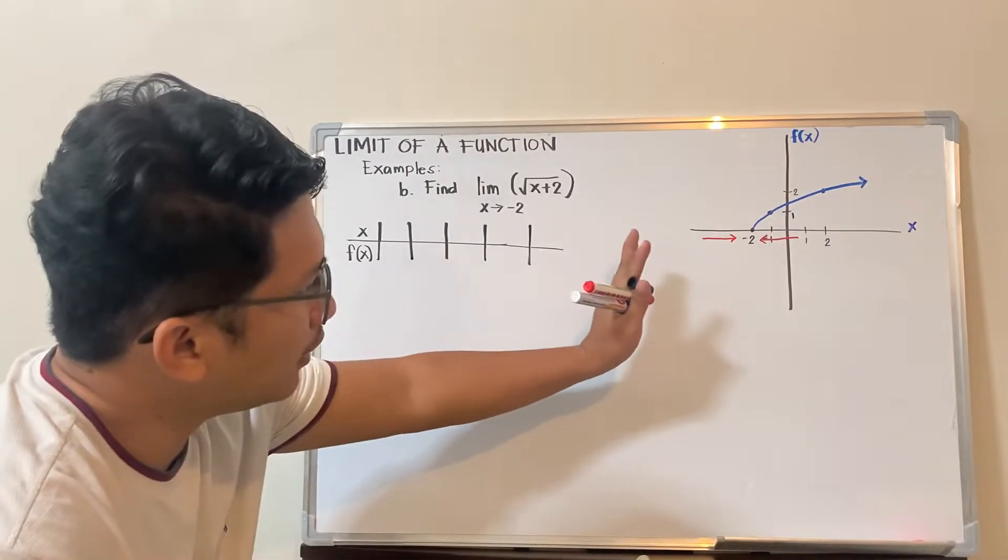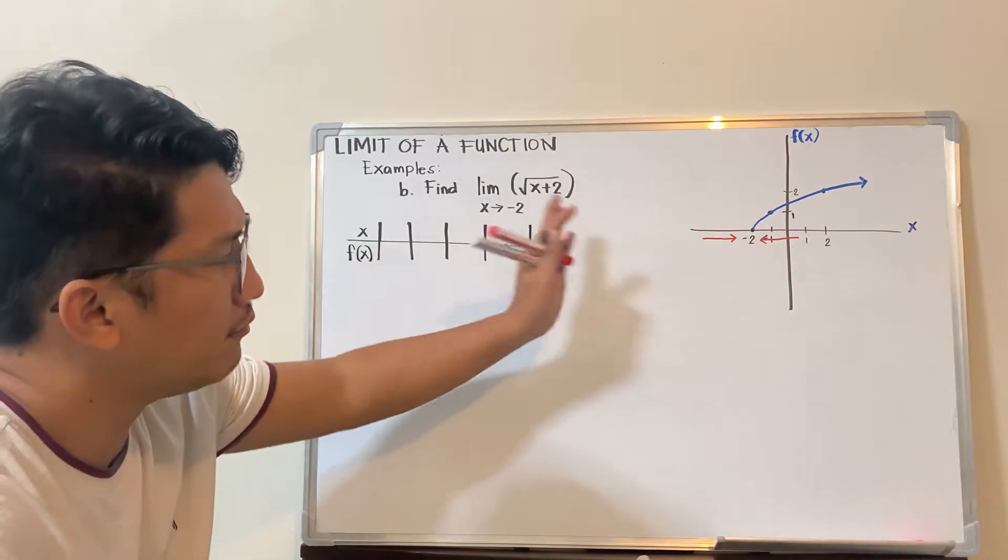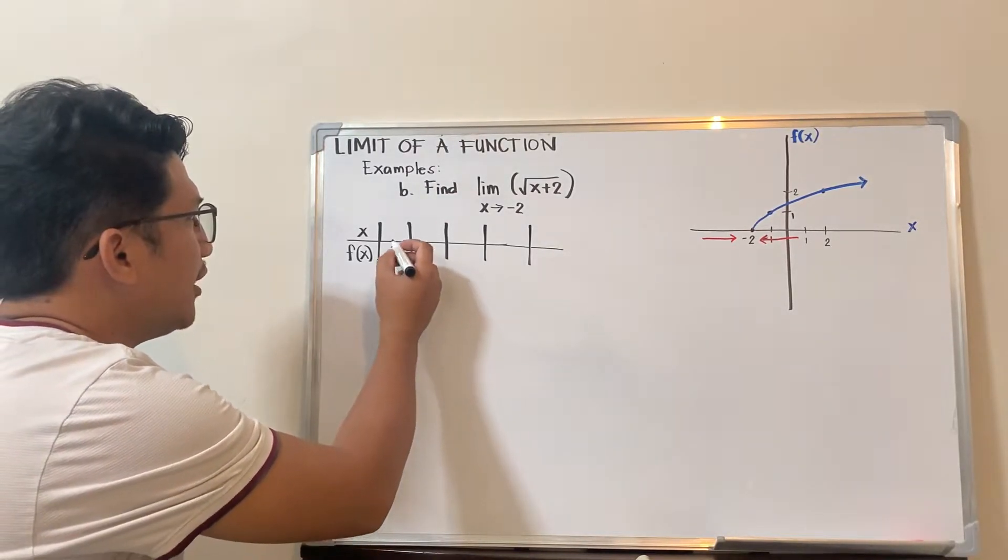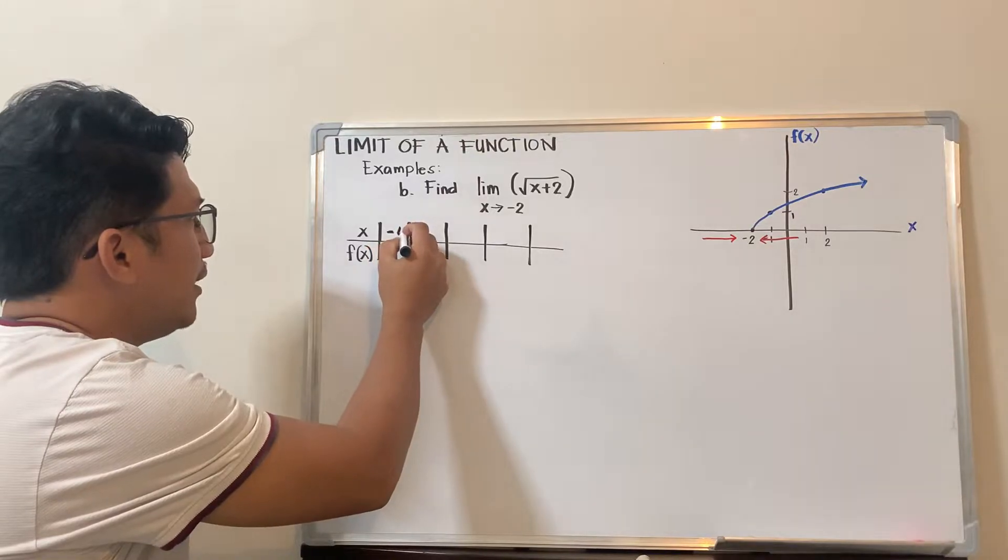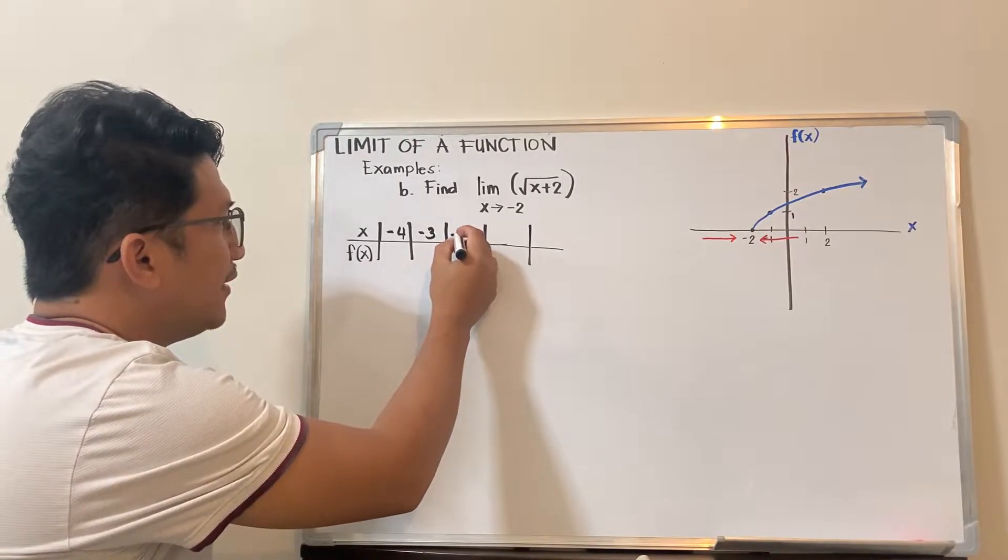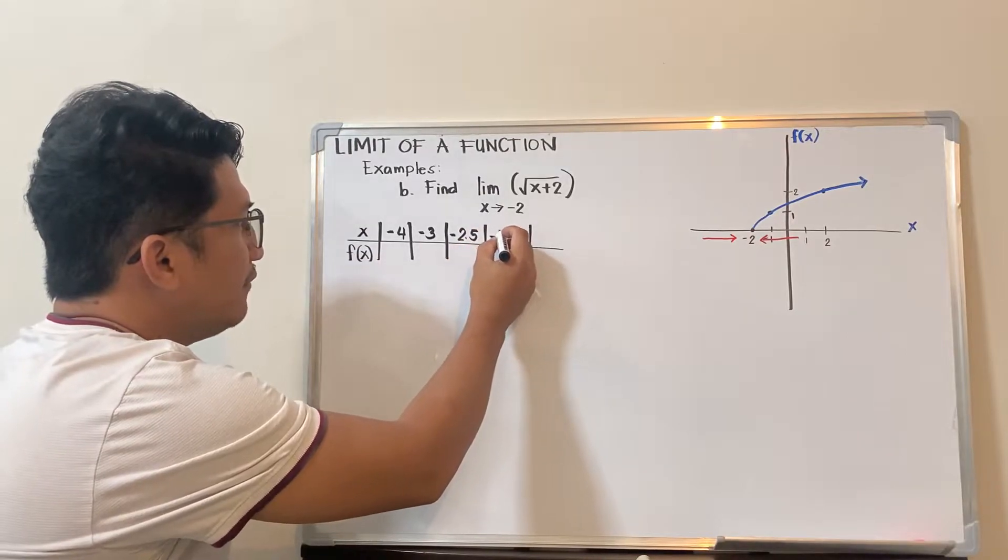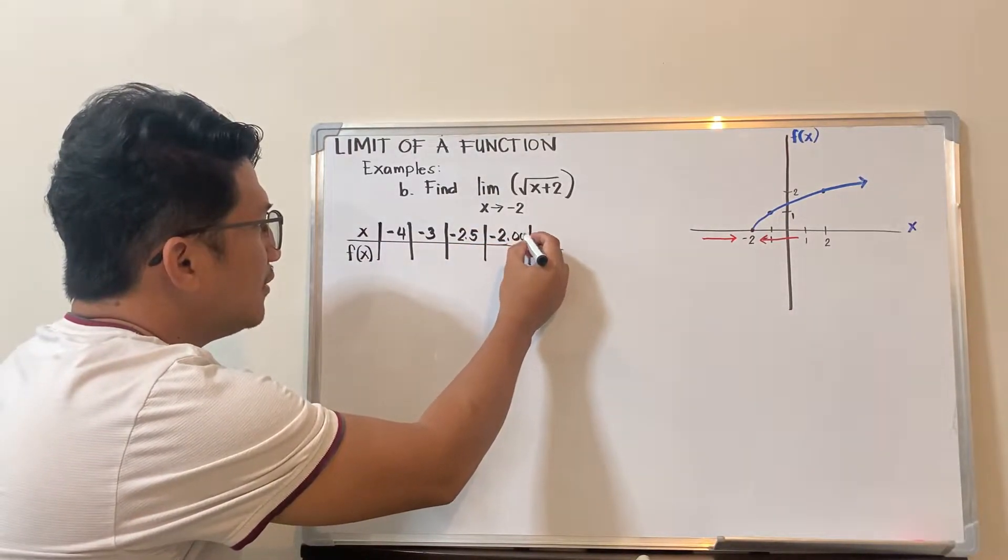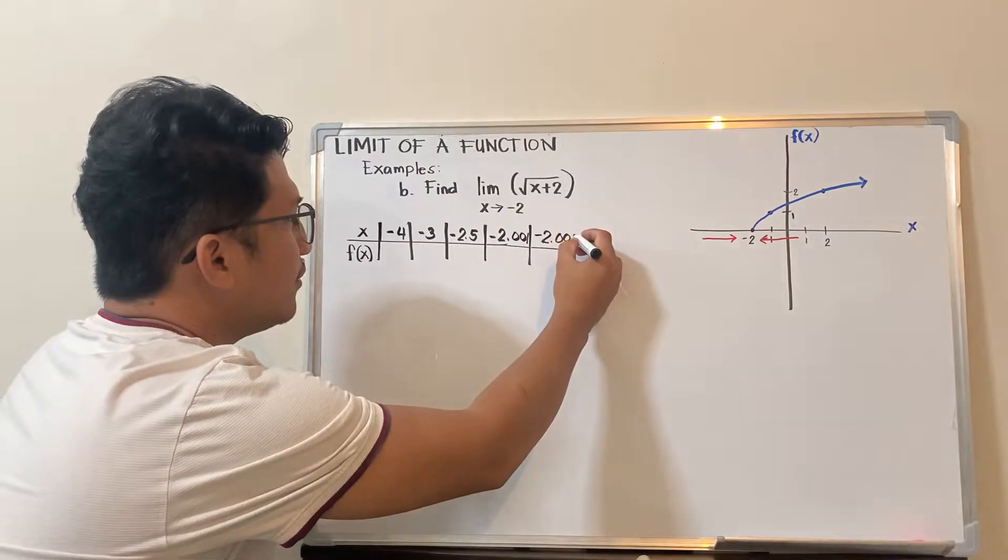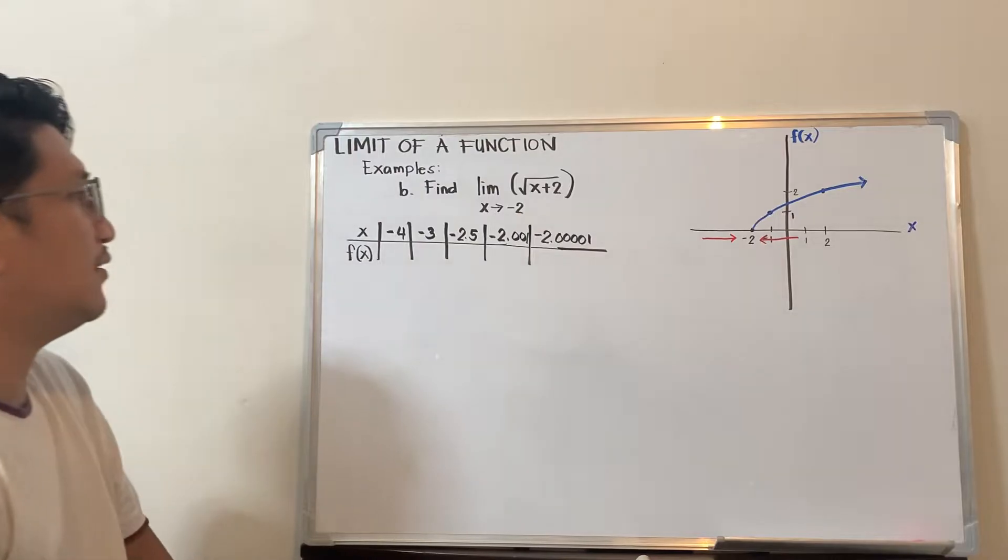From the left of negative 2, you can start from negative 5 going to negative 2, you can start from negative 3, or any number you want, as long as it's on the left. I'll start with negative 4, then negative 3, then negative 2.5, negative 2.001, and then negative 2.00005.